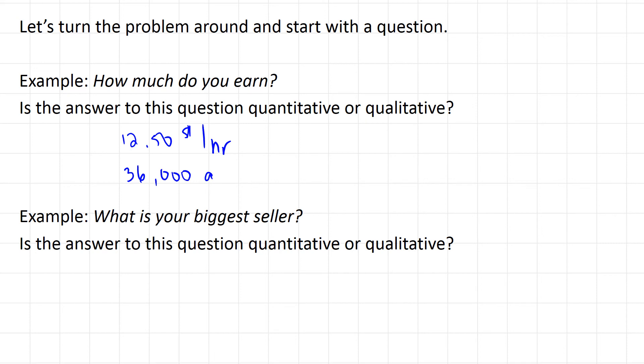And notice both of these responses are quantitative because they deal with numbers. What is your biggest seller? If you're asking a coffee shop, for example, they might answer the dark roast or the lattes. That's a description of the product, and that would be qualitative.